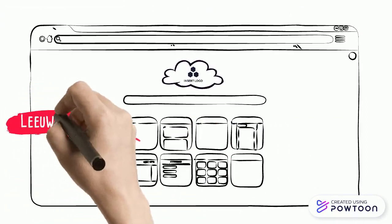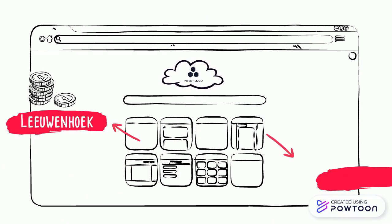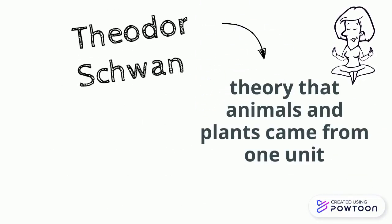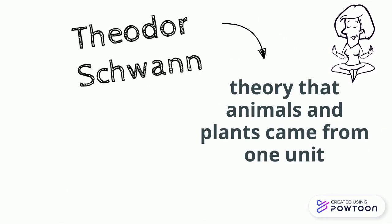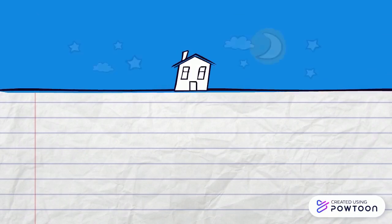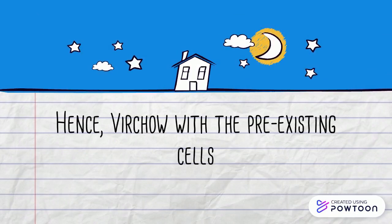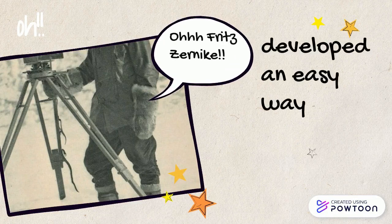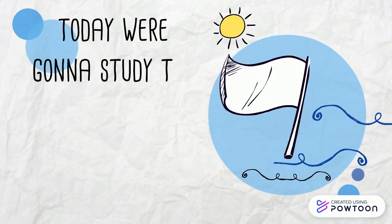Anton van Leeuwenhoek made history by bringing microscopy to biology, while Robert Hooke discovered a sliver of heart tissue. Theodore Schwann showed us the theory that animals and plants came from one unit, and that cells come from pre-existing cells. Fritz and Mickey developed an easy way to see cells.